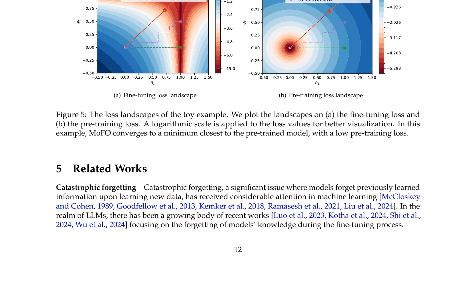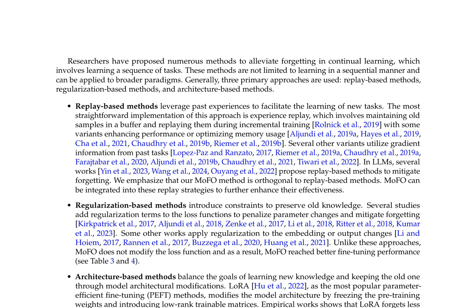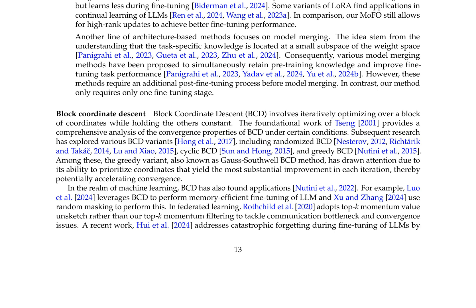The paper reviews related works on catastrophic forgetting, particularly in the context of LLMs, highlighting the growing body of recent works on forgetting during fine-tuning. Existing methods to alleviate forgetting in continual learning are categorized into three primary approaches: replay-based methods, which leverage past experiences to facilitate learning of new tasks; regularization-based methods, which introduce constraints to preserve old knowledge; and architecture-based methods, which balance learning new knowledge and retaining old knowledge through model architectural modifications.